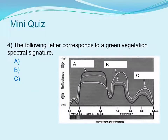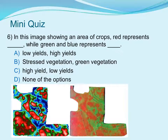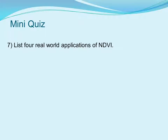Question four: the following letter corresponds to green vegetation — A, B, or C — and you really want to look at the microns or micrometers between 0.7 and 1.1. Question five: what are the Landsat 8 bands for blue, green, red, and near infrared? Question six: in this image showing an area of crops, red represents blank while green and blue represent blank. And the last question: list four real-world applications of NDVI.